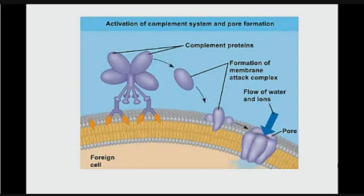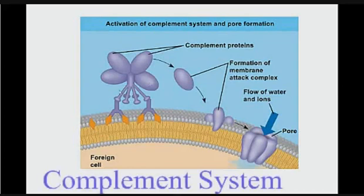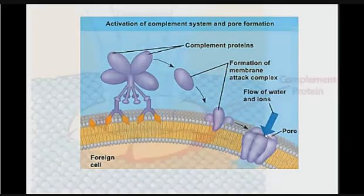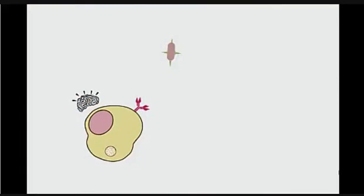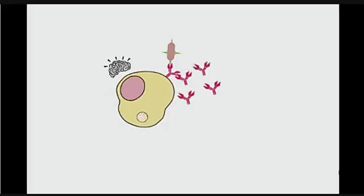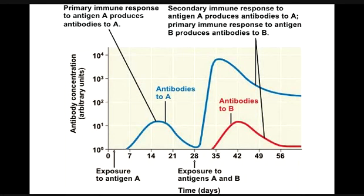Another way antibodies can inactivate antigens is through activation of the complement system. Antibodies bind to the antigen on a foreign cell, and complement proteins cause a cascade of events that end in the poking of the cell membrane, causing the cells to lyse and die. Memory B-cells remember the antigen so that if it invades again, the body will have a faster and more abundant antibody production — memory B-cells play a huge role in the secondary immune response.